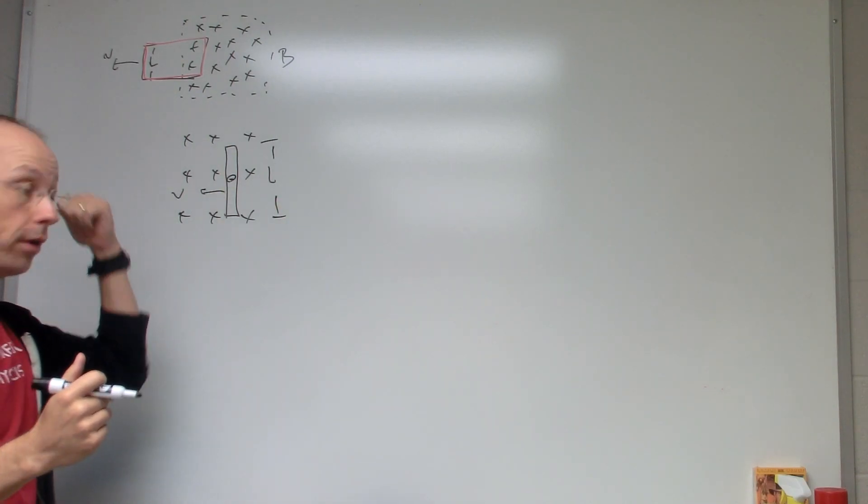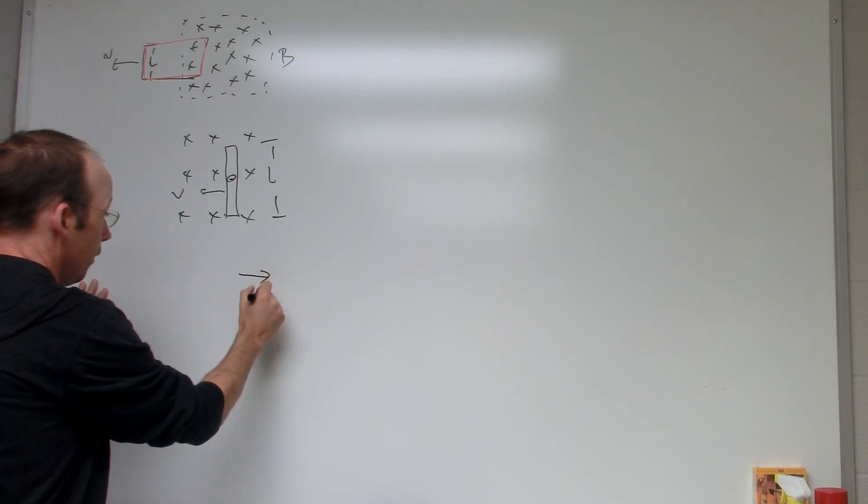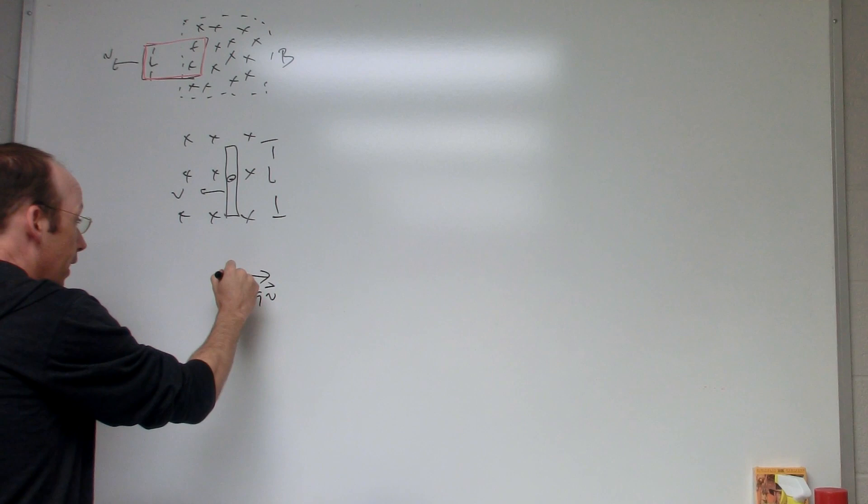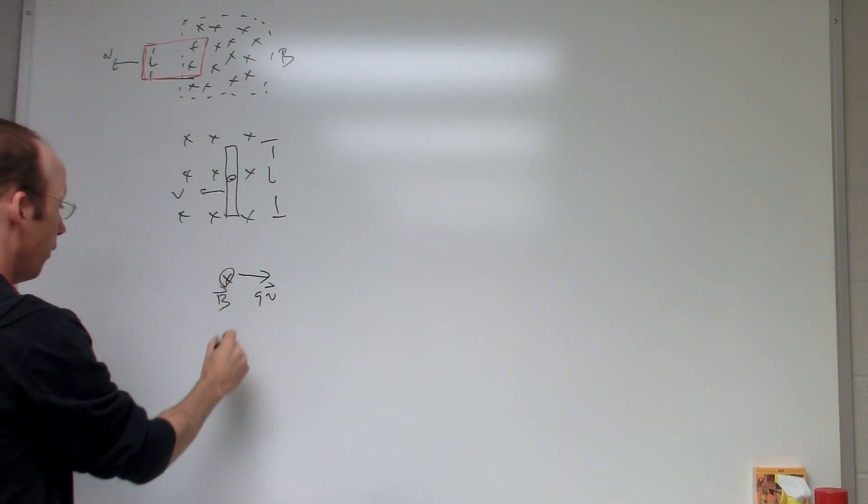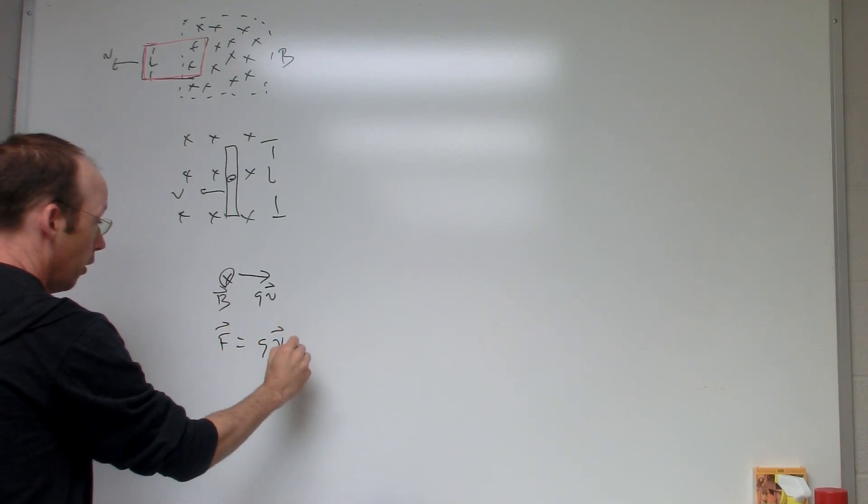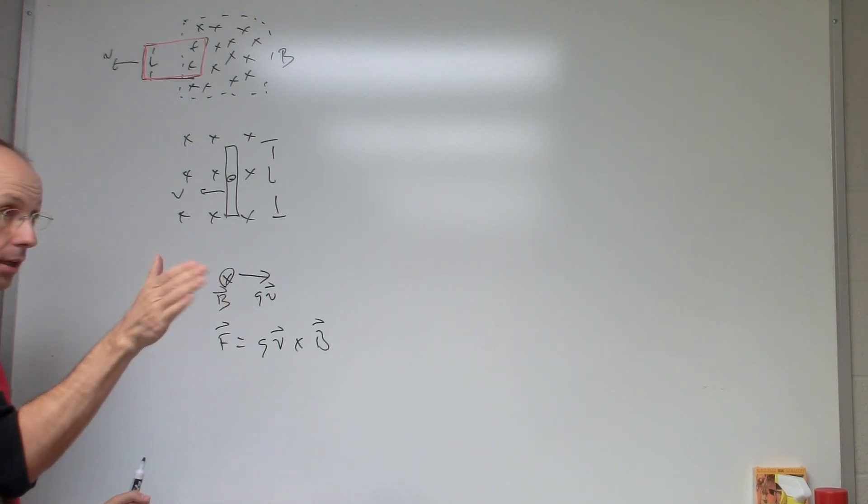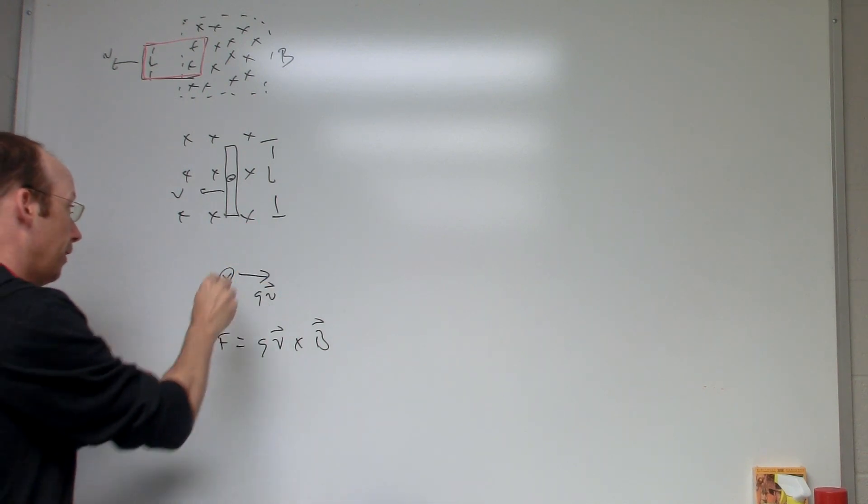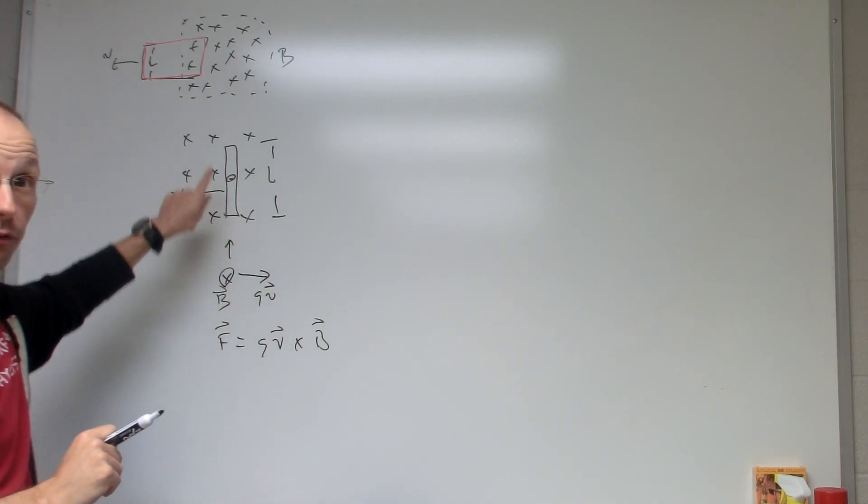If I take one electron right there, then it's moving that way in the bar. What's going to happen? Well, I'm going to have QV is that way because it's a negative charge. I have B going into the board, so I know there's a magnetic force F equals QV cross B. So in this case, QV cross B, using my right-hand rule, QV is that way, B is that way, so QV cross B is that F.